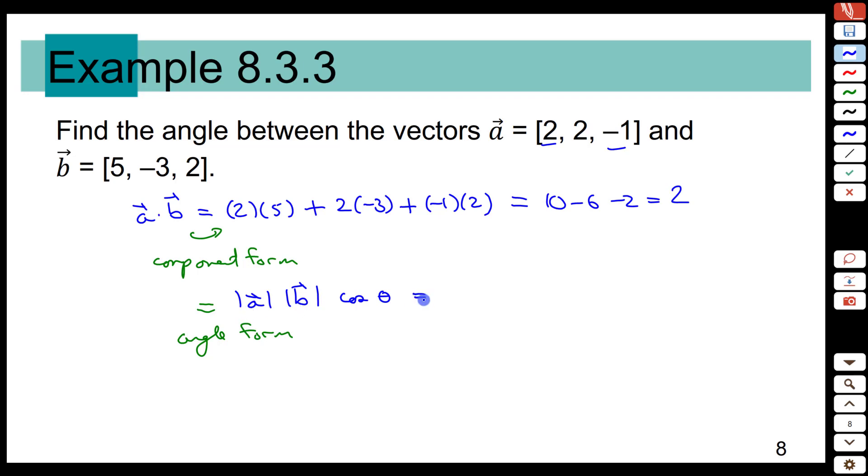We can figure out the length of a. We'll do that on the side here. The length of a is the square root of each component squared, so 2 squared plus 2 squared plus negative 1 squared. Or 4 plus 4 plus 1 is 9, square root of 9, which is 3.